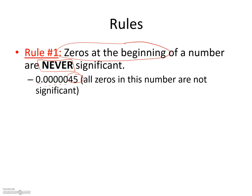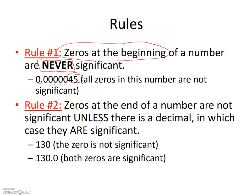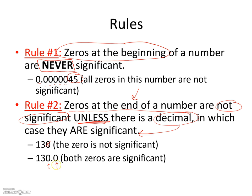Rule two: zeros at the end of a number are not significant unless there is a decimal point, in which case they are significant. For example, 130 — that trailing zero is not significant because there's no decimal. But if I write 130.0, I'm telling you I actually know that zero, and it rounds to zero. That increases significance: instead of just two sig figs, all four digits count.